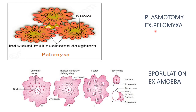Plasmatomy is the division of a multinucleated parent into multinucleated daughter individuals. As seen in the picture, this type of division is seen in pilomyxa.